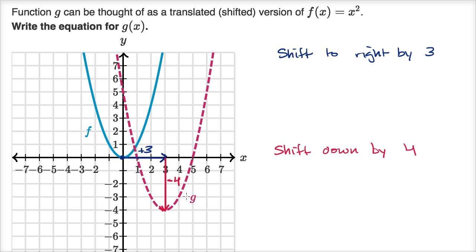Now, some of you might already be familiar with this, and I go into the intuition in a lot more depth in other videos, but in general, when you shift to the right by some value, in this case we're shifting to the right by three, you would replace x with x minus three.